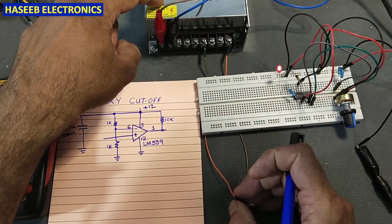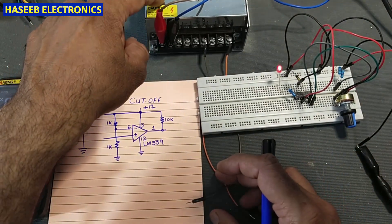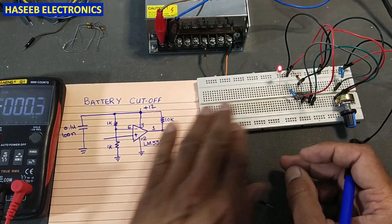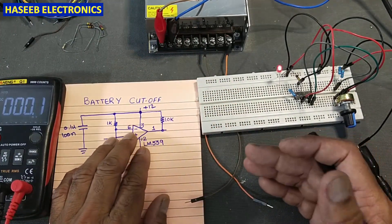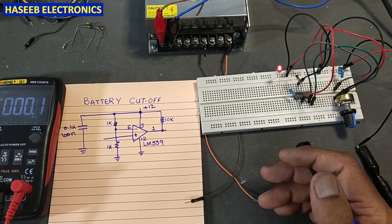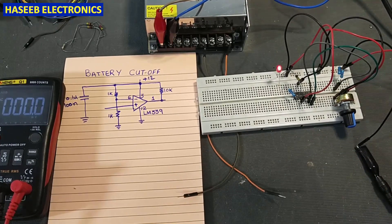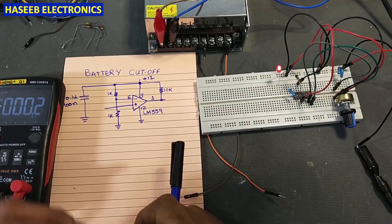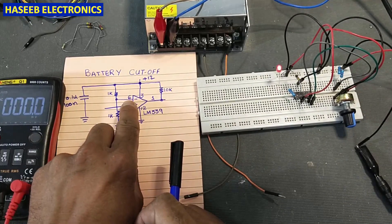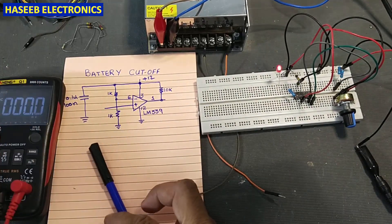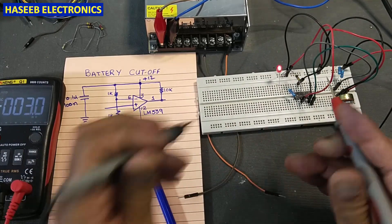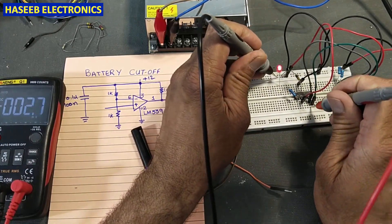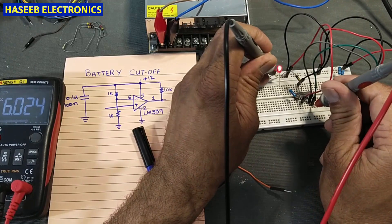Consider this is a 12V battery — we want to disconnect the next circuit when the battery level reaches 13.4V. How do we calculate and design this? The reference voltage is applied at pin number 6.